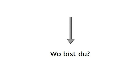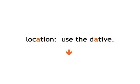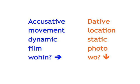When we're talking about movement towards a destination, we use the accusative after the preposition. When we talk about a location, we use the dative. It's almost like the difference between a movie and a photo. The accusative denotes movement. It's dynamic. You need a video camera to capture it. It answers the question Wohin? Where to?